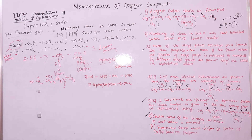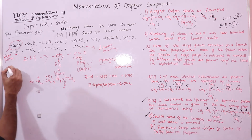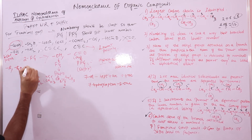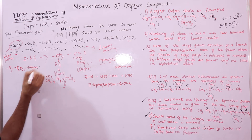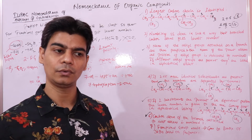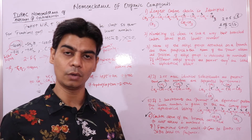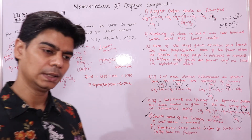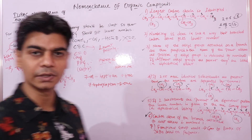Remember: if you have alkyl groups like R, phenyl (C6H5), any halogen, methyl, benzoyl, ethoxy, or similar side chain substituents, these will always go in the prefix.